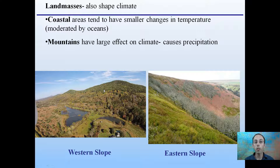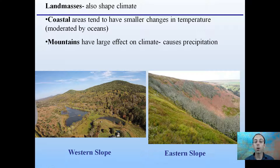Land masses can also shape climate. As mentioned, coastal areas tend to have smaller changes in temperature, and mountains can have a large effect on climate because they can cause precipitation.